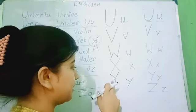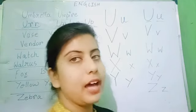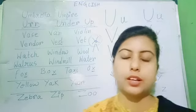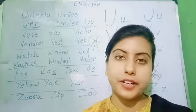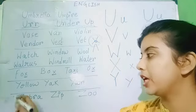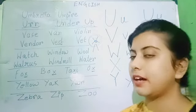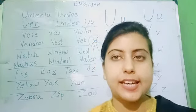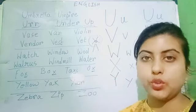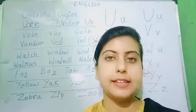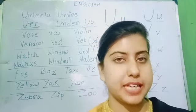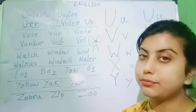Now, we will use some words starting with Y. Yellow. Y-E-L-L-O-W. Yellow is a color. Yak. Y-A-K. Yak. Yak is an animal. Yam. Y-A-M. Yam. Yam is a fruit.